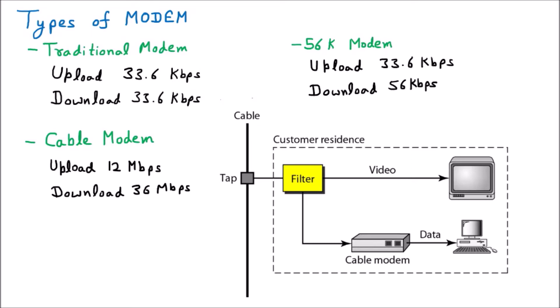There is a diagram showing a cable tap, filter, TV, and computer, meaning this is not a simple modem — it has different capabilities. From the internet service provider, a cable is provided to our home. Through this cable, data flows. There is a device called a tap applied at this point, which connects the cable in our area to our home.